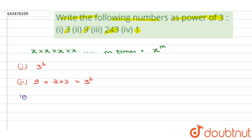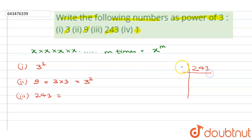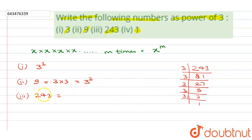For the third one, we have to represent 243. When we factorize 243, we get three into three into three into three into three. We can see that three is multiplied five times, so 243 can be written as three power five.